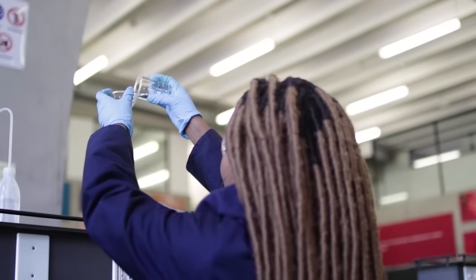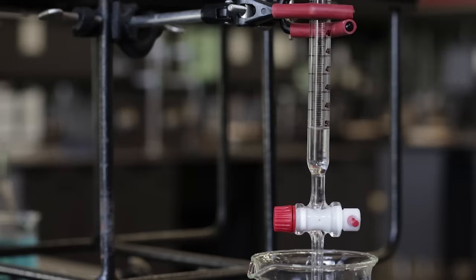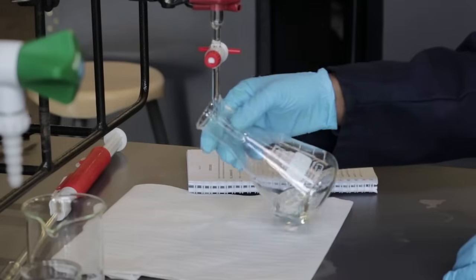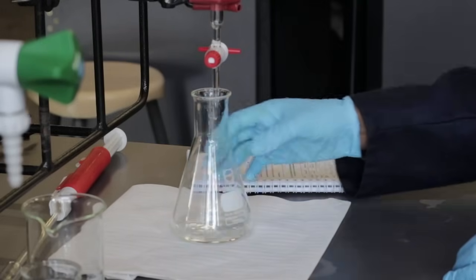A second solution is placed in a burette. This is the titrant. This solution contains a chemical that will react with the analyte chemical sample in the conical flask.